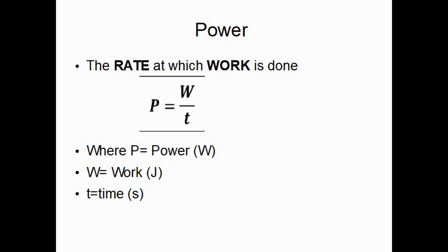Power. What is power? Power is the rate at which work is done, given by the formula P equals W over T, where P is power measured in watts, W is work measured in joules, and T is time measured in seconds.